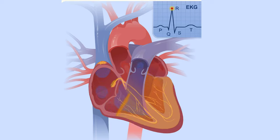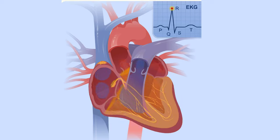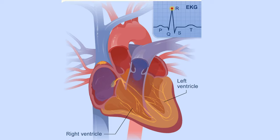both ventricles contract, but not at exactly the same moment. The left ventricle of your heart contracts an instant before the right ventricle. On an EKG, the R wave marks the contraction of your heart's left ventricle, and the S wave marks the contraction of your heart's right ventricle.